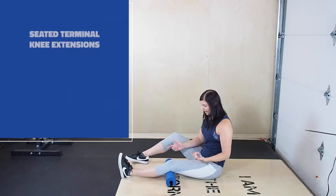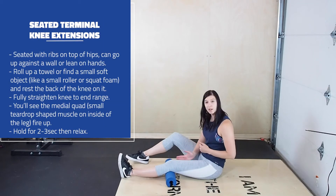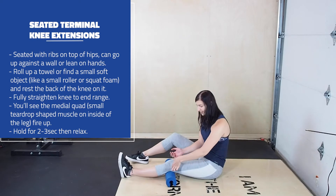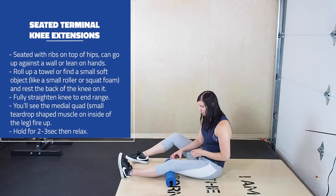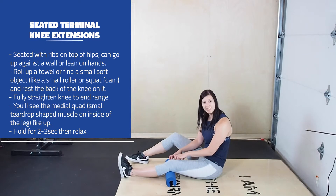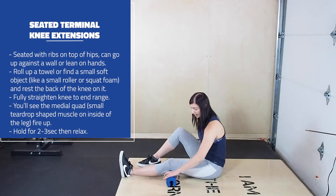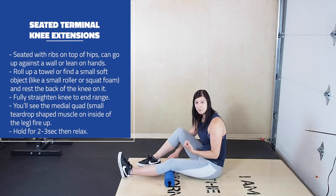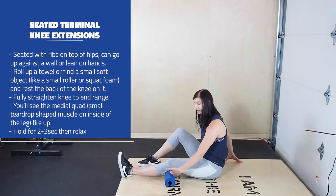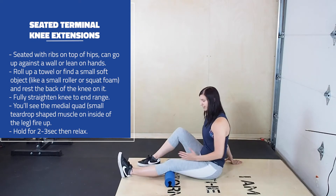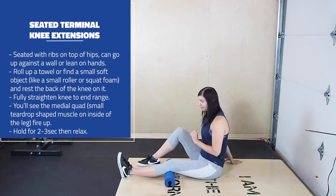This exercise is going to allow us to focus a contraction on the inside of the quad — the VMO. We tend to get very dominant with the lateral quad, so this is a great way to target that teardrop muscle to the inside of the kneecap. I have a little squishy foam roller here; you can also use a rolled-up towel if you don't have one. We're just going to rest it under the knee and take the leg nice and straight across it.